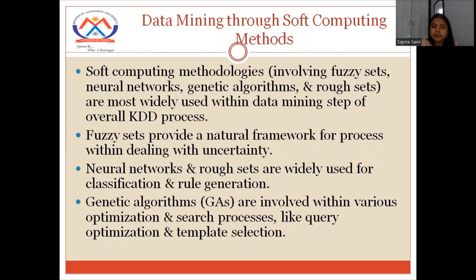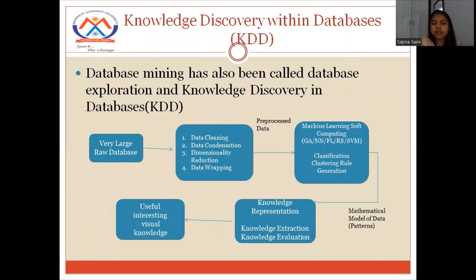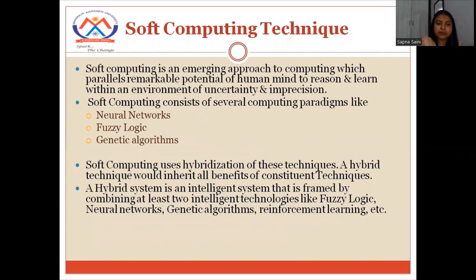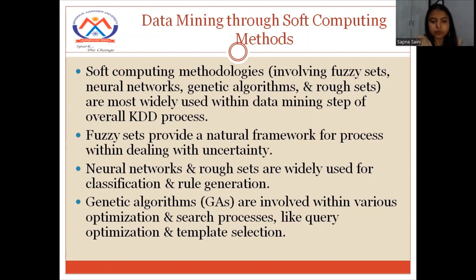Neural networks and rough sets are used for classification and rule generation. For generating patterns — the mathematical model of data — we can use neural networks and rough sets. Next, genetic algorithms are involved in various optimization and search processes like query optimization and template selection. Genetic algorithms are based on biological natural processes, which make them a good method for optimization and search.